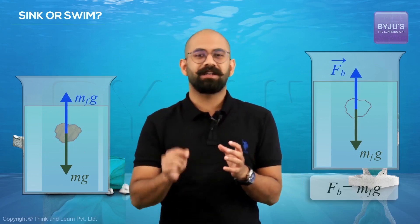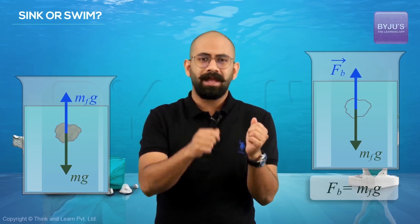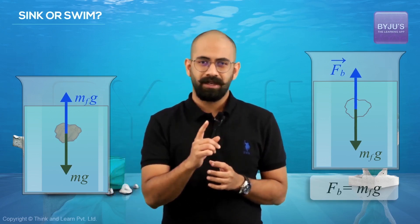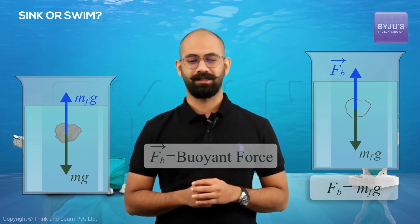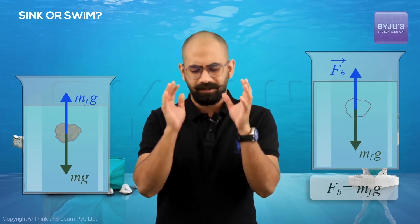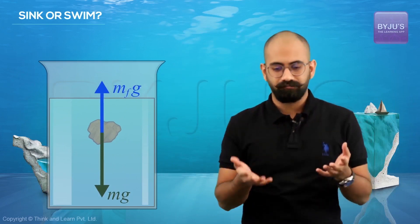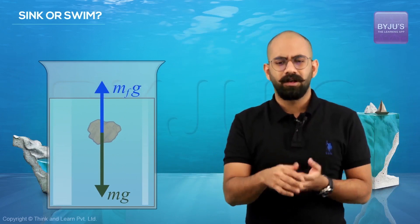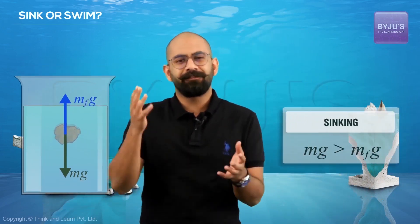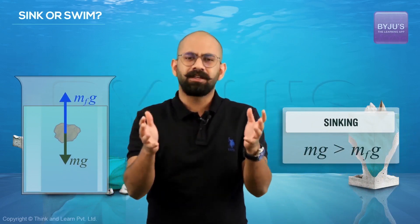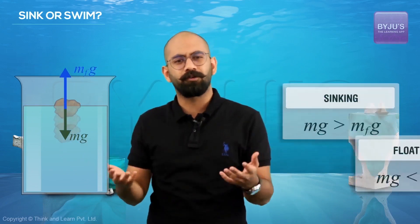So whenever there is an object inside a fluid, the force that the surrounding fluid applies on it will always be in the upward direction, and this force is what we call the buoyant force. Looking at the free body diagram, if Mg is greater than MfG, the net force will be downward, so the body will move down and sink. Similarly, if Mg is less than MfG, the net force is upward, so the body will move up and float.